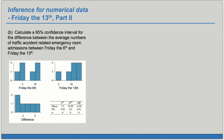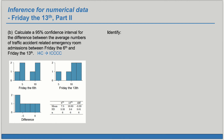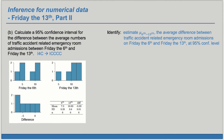Now let's do a similar thing, but we'll do a confidence interval for the mean difference so that we can get an interval of all reasonable values for this difference. Using the same I-4C framework — Identify, Choose, Check, Calculate, Conclude — we want to identify what we're estimating and the confidence level. We're estimating mu sub (6th minus 13th), the average difference between traffic accident-related emergency room admissions on Friday the 6th and Friday the 13th, at the 95% confidence level. We're going to choose a one-sample t-interval for a mean, applied to the paired differences.